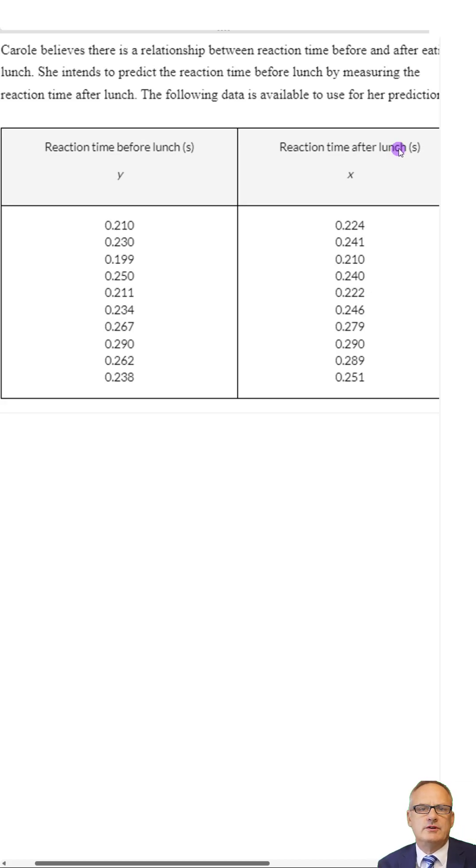This is a quick video to show how we're going to find the Pearson's product moment correlation coefficient, otherwise known as R, on your calculator. So we've got this data here in this question, and what we're going to do is plug that into our calculator and see how we can find the correlation coefficient.